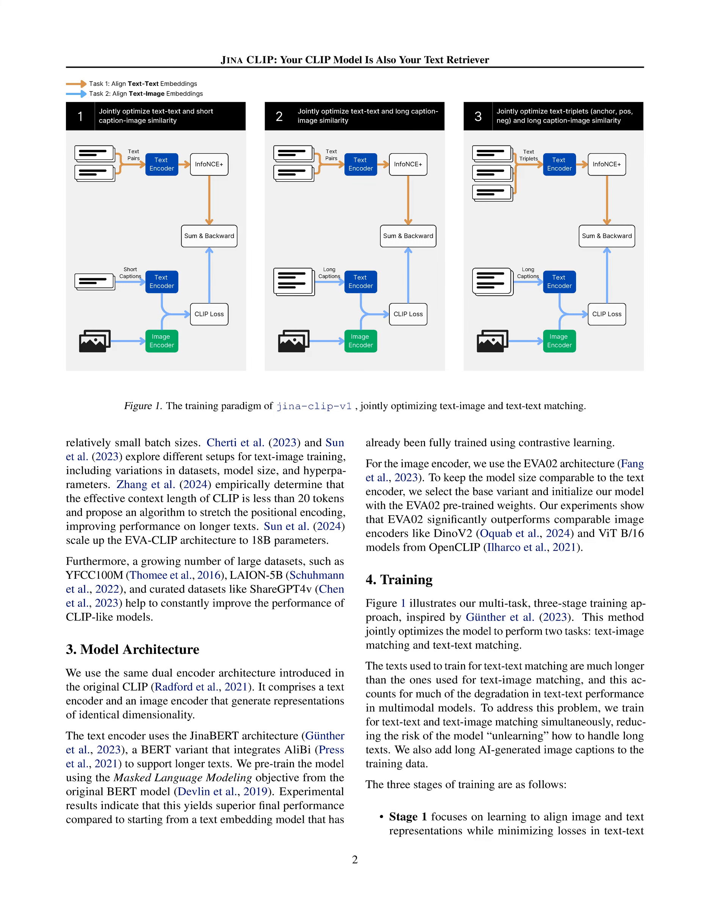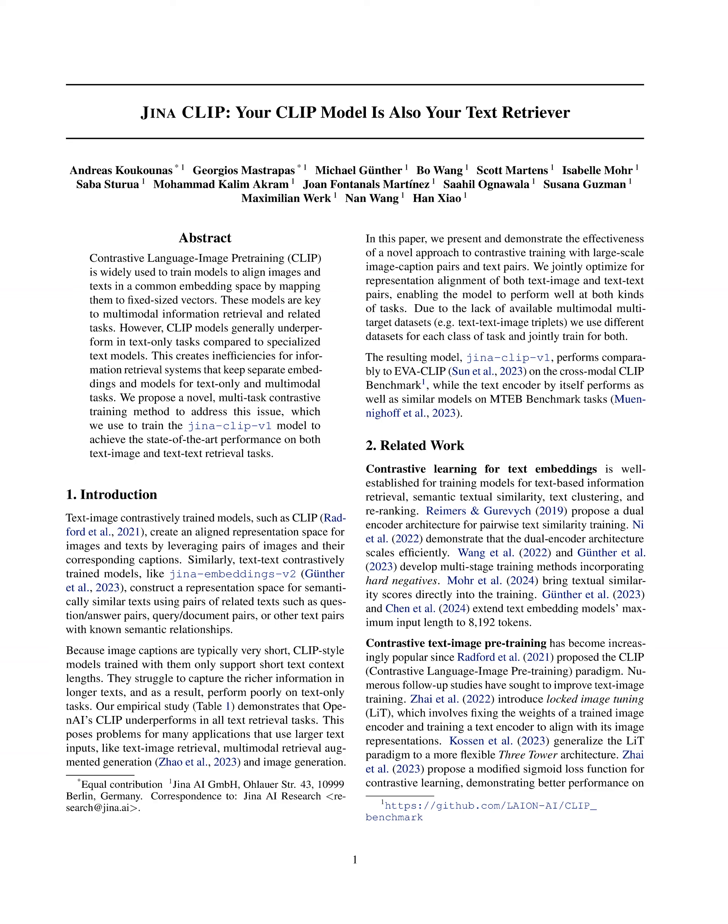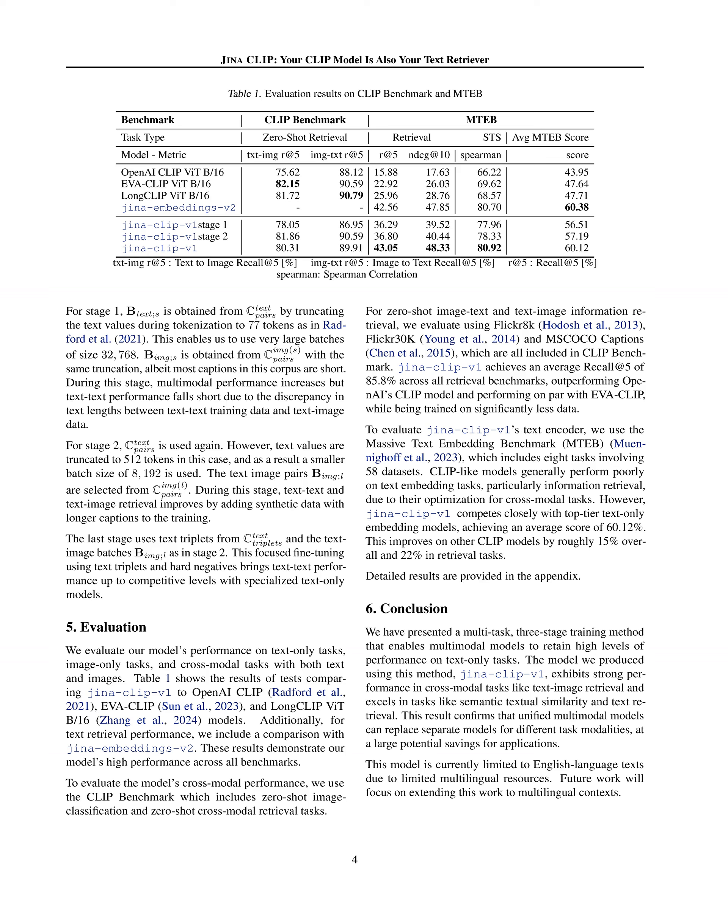What are the limitations of the proposed method? The limitations include the challenge of handling longer texts in text-only tasks, as text-image contrastively trained models like CLIP struggle to capture richer information in longer texts, leading to poor performance. The model also underperforms in text-retrieval tasks, posing problems for applications requiring larger text inputs. Another limitation is the lack of available multimodal multi-target datasets, resulting in using different datasets for each class of task and jointly training for both, potentially impacting overall performance. The discrepancy in text lengths between text-text and text-image training data can also degrade text-text performance in multimodal models.